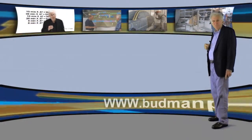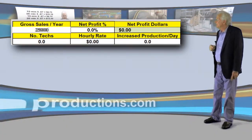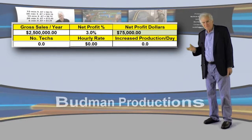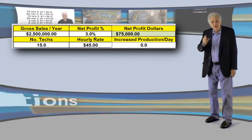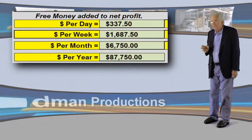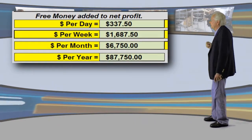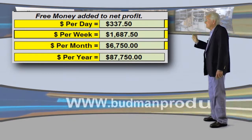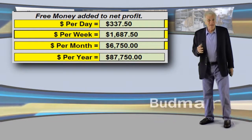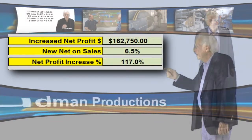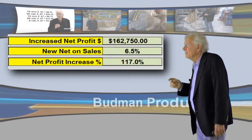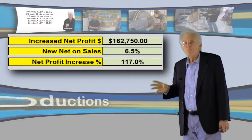So how about if you're a large shop? Let's say that you do 2.5 million dollars a year. You've got 15 techs, a $45 per hour labor rate, and you want to increase your production by five-tenths per man. Watch what happens when I tab off. We've got $337.50 per day, $1,687.50 per week, $6,750 per month, and a whopping $87,750 a year. Again, this is free money. You've increased your net dollars to $162,750 — that's phenomenal — and that is a 117% net profit gain.